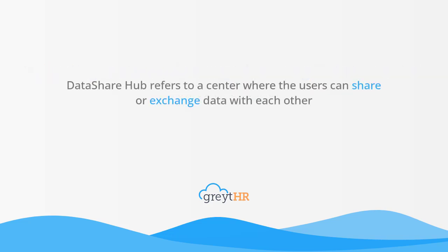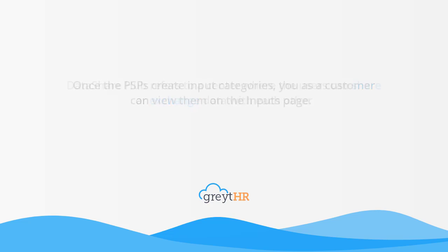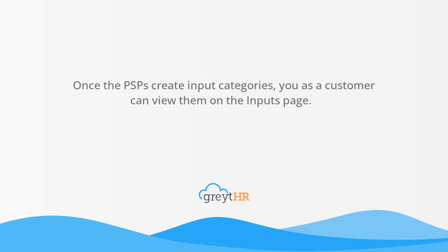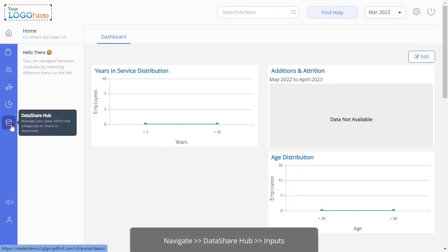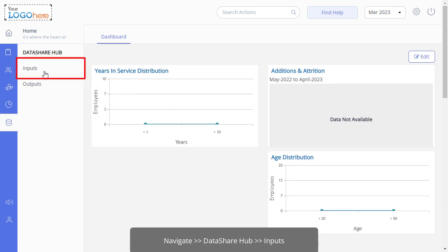Data Share Hub refers to a center where users can share or exchange data with each other. Once the PSPs create input categories, you as a customer can view them on the inputs page. In this video, you will learn how to upload and download the files shared and add the inputs requested by PSPs. Let's get started by navigating to Data Share Hub and then Inputs.